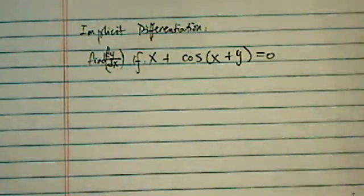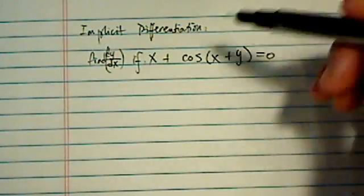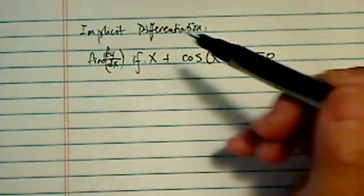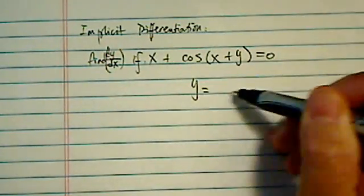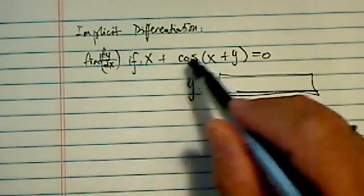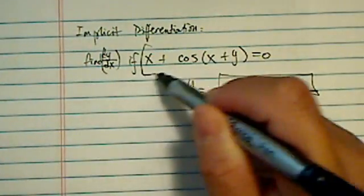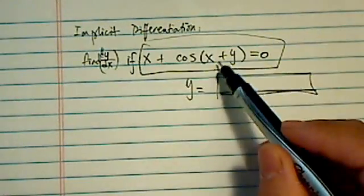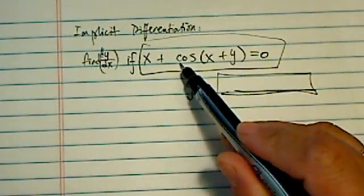Implicit differentiation is basically saying, look, we want to find dy/dx, but we don't have a y equal to a nice equation of x. As in this case, it's probably as messy as it gets because we have the variable buried inside a trig function.